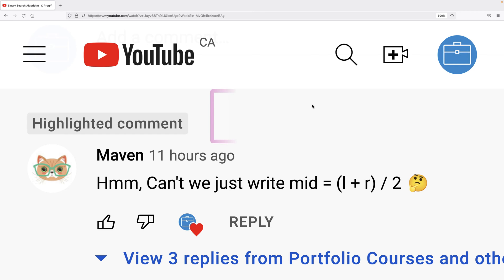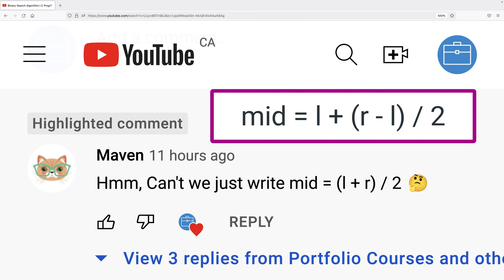In my video for the binary search algorithm, I had L plus R minus L divided by 2. And there's actually a reason why it's better to do it that way, even though it's longer and involves an extra calculation. Let's go over why this is the case.